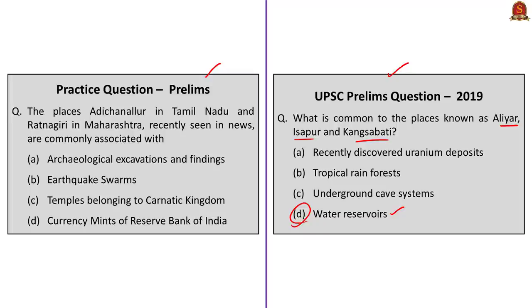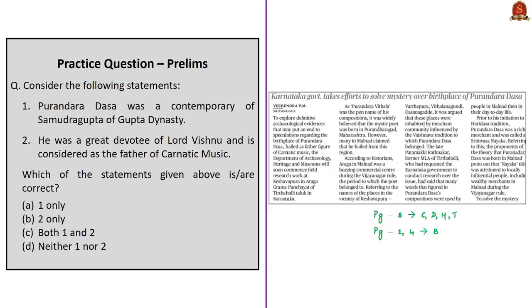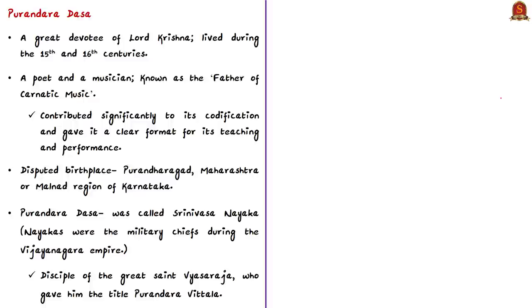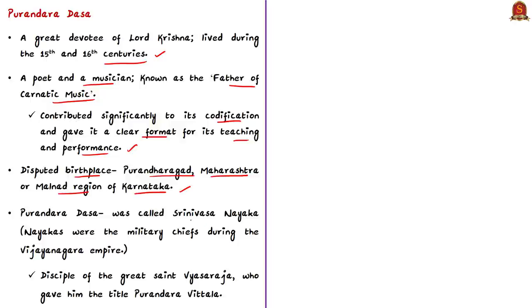The next news article discusses claims regarding the birthplace of the saint Purandharadasa. Purandharadasa was a great devotee of Lord Krishna who lived during the 15th and 16th centuries. He was a poet and musician and is known as the father of Carnatic music. He contributed significantly to the codification of Carnatic music and gave a clear format for its teaching and performance. His birthplace is disputed — it is widely believed he was born at Purandharaghar in Maharashtra, but many in the Malnad region of Karnataka claim he hailed from that region.